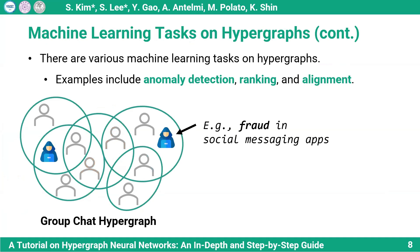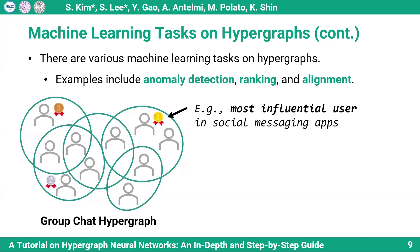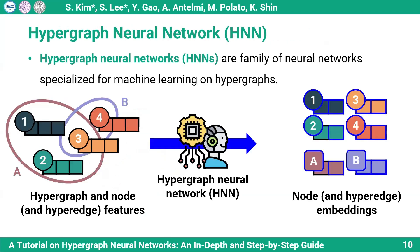We can formulate various machine learning tasks on hypergraphs. For example, in the group chatting hypergraph, we may want to detect fraud user nodes. We may also want to find influential user nodes in the same group chat hypergraph. To solve such tasks on hypergraphs, we can use hypergraph neural networks.